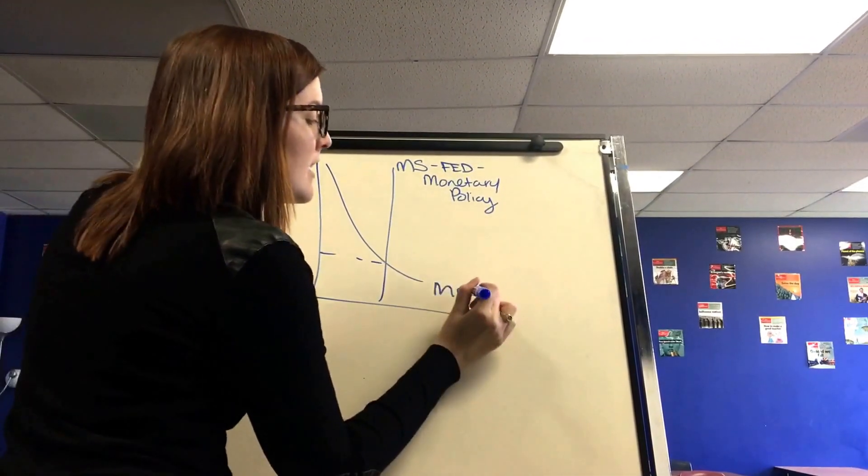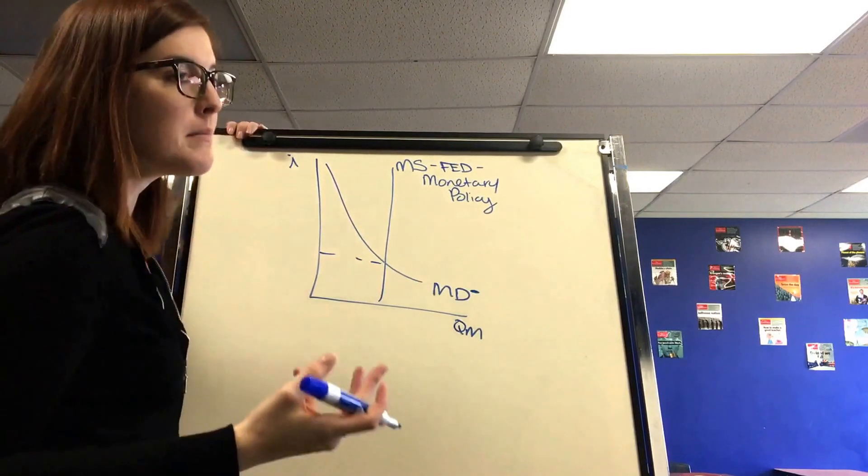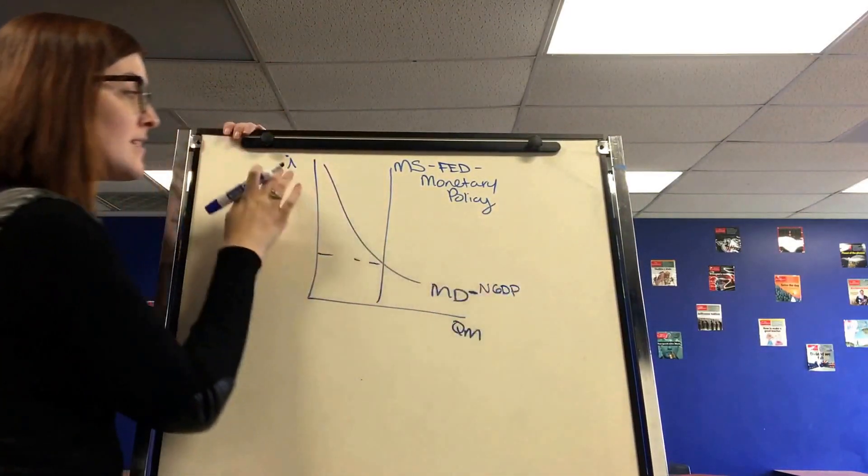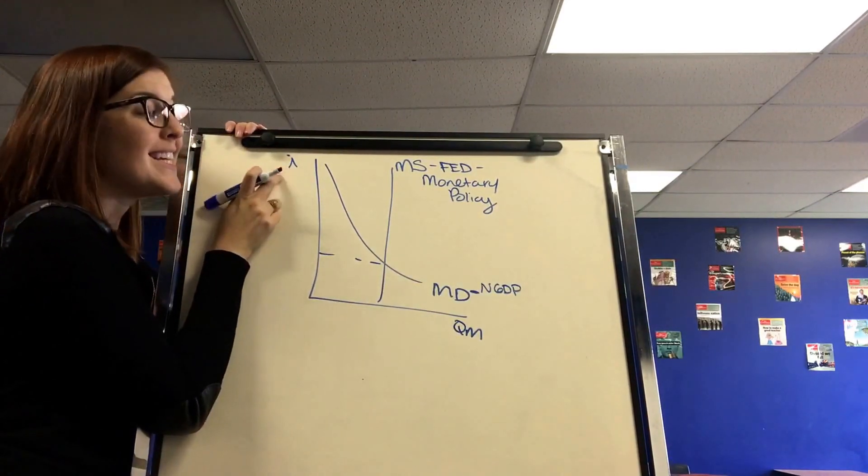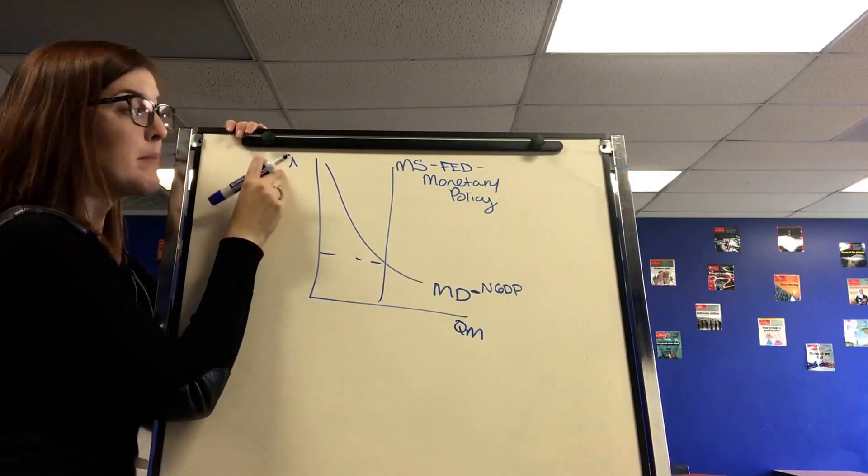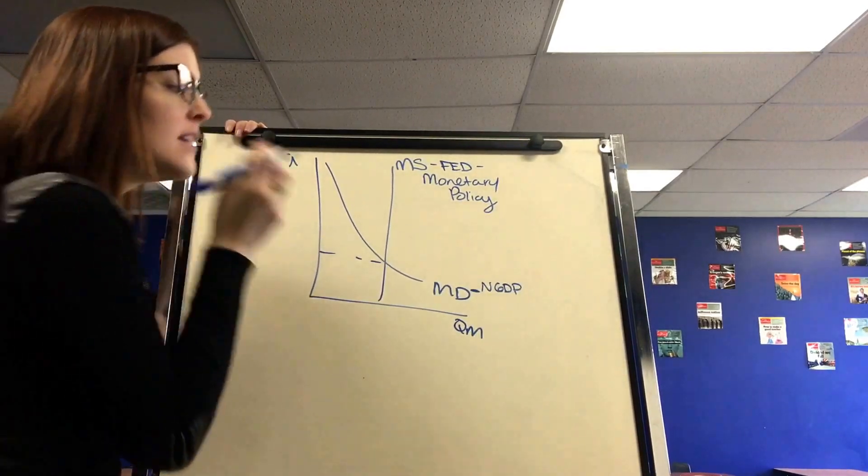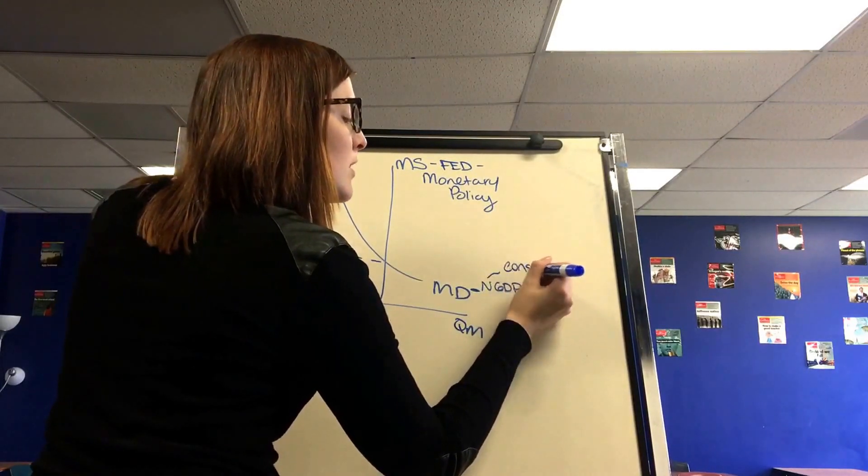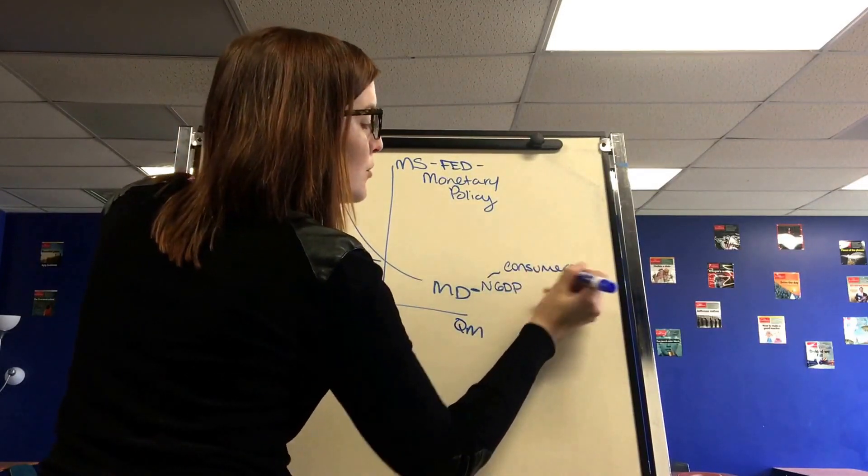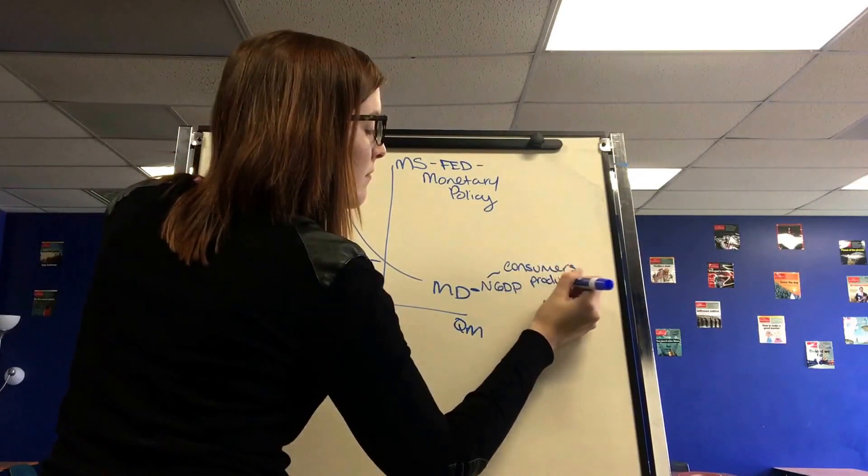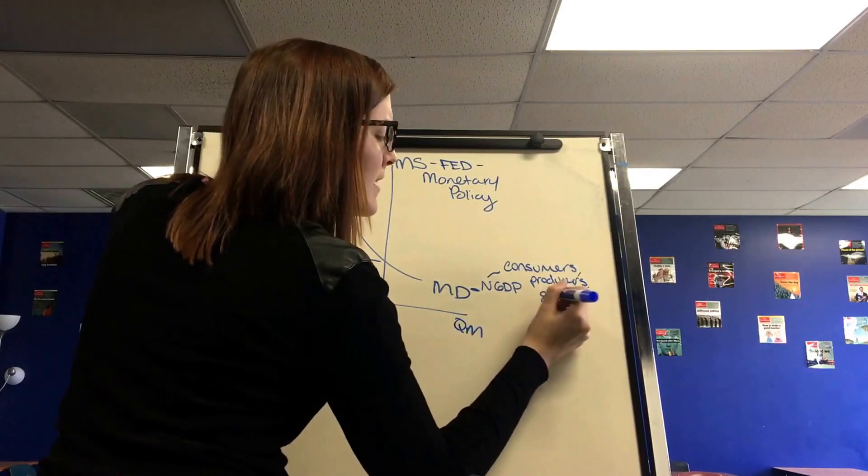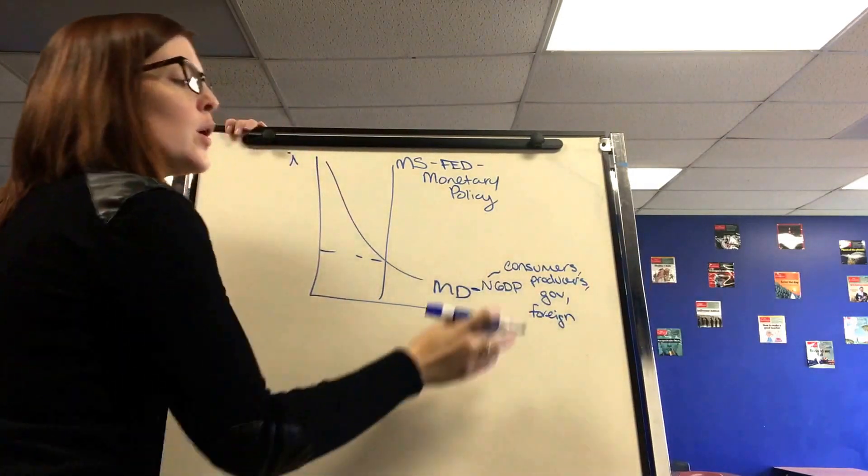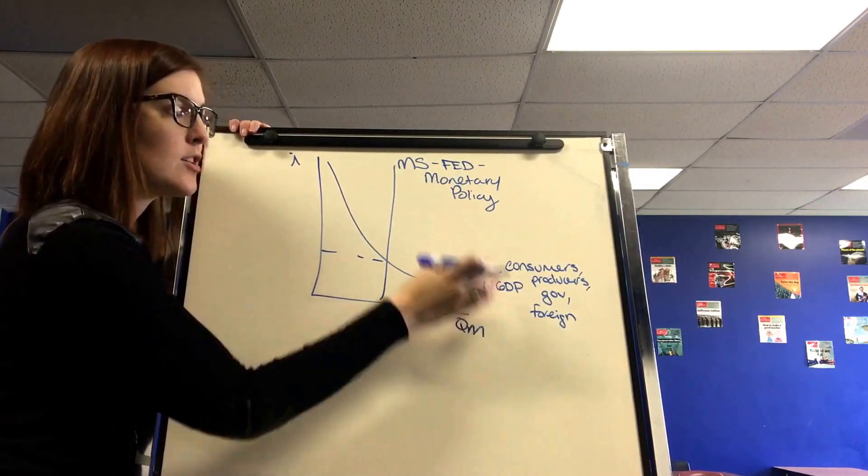The money demand line is moved by everyone else. What I mean by this is it's moved by changes in nominal GDP. Nominal because this is the nominal interest rate, the interest rate that banks have to use on loans. So banks use nominal. Remember that. So everyone else, more specifically, anything to do with consumers, producers, the government, or the foreign sector will move money demand. We don't really move money demand as much as we move money supply.